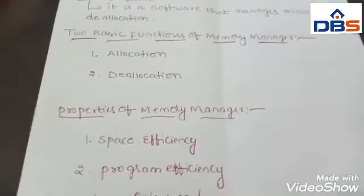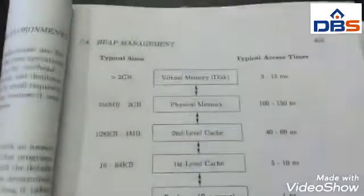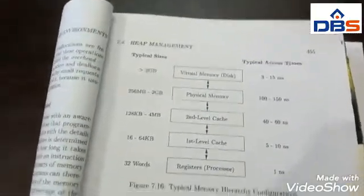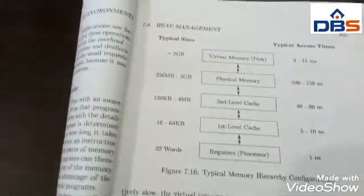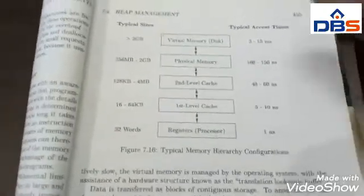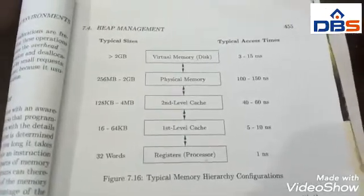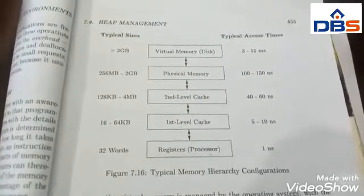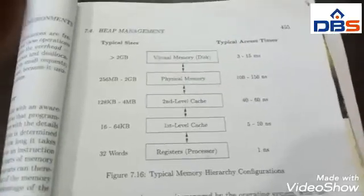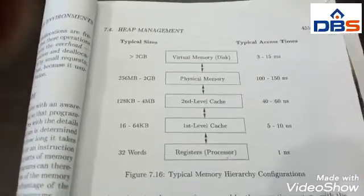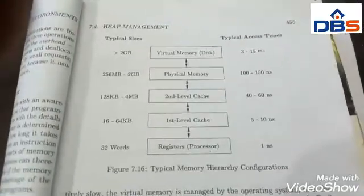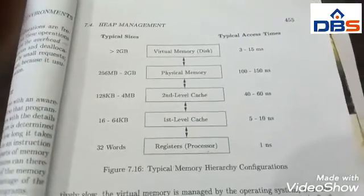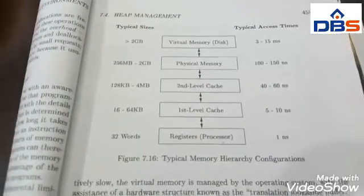Coming to the memory hierarchy of a computer — what is memory hierarchy? If you see the diagram here, there is a structure of the memory hierarchy of a computer. We have registers, cache, physical memory, and virtual memory, along with their typical sizes and typical access times. Memory hierarchy consists of a series of storage elements, with the smaller, faster ones closer to the processor and the larger, slower ones further away.